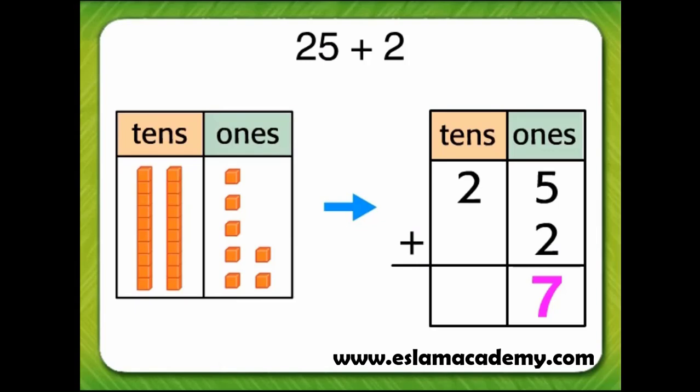Finally, add the tens. To add the tens, count the rods in the tens column. One, two. There are two tens. The sum is two tens and seven ones, or 27.